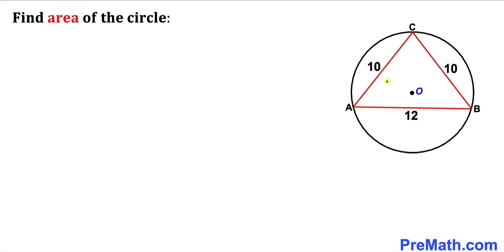In this video we have an isosceles triangle ABC inscribed in a circle, such that side length AC is 10 units, side length BC is 10 units as well, and side length AB is 12 units. We are going to calculate the area of this circle.